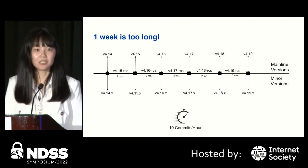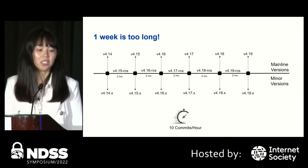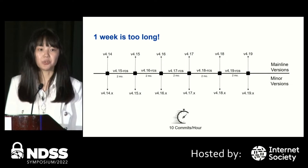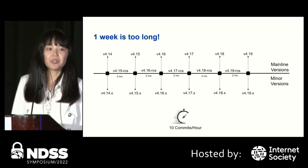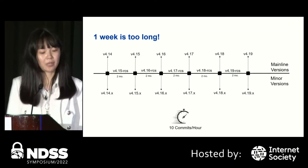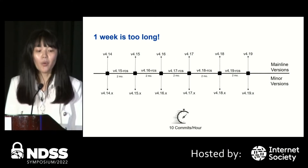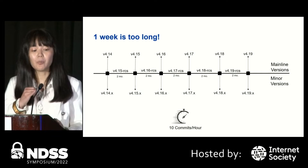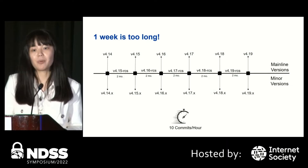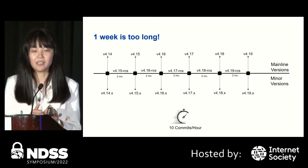The problem is one week is too long compared with the fast kernel development cycle. The Linux kernel releases stable versions every two months, and among these two months, each release candidate is published weekly. Once a stable version is released, it is maintained separately as stable variants, called minor variants. Besides, there are 10 commits per hour submitted to the Linux repo. With so many different versions and rapid development cycles, it's not feasible to apply UBTect to each variant and each commit.